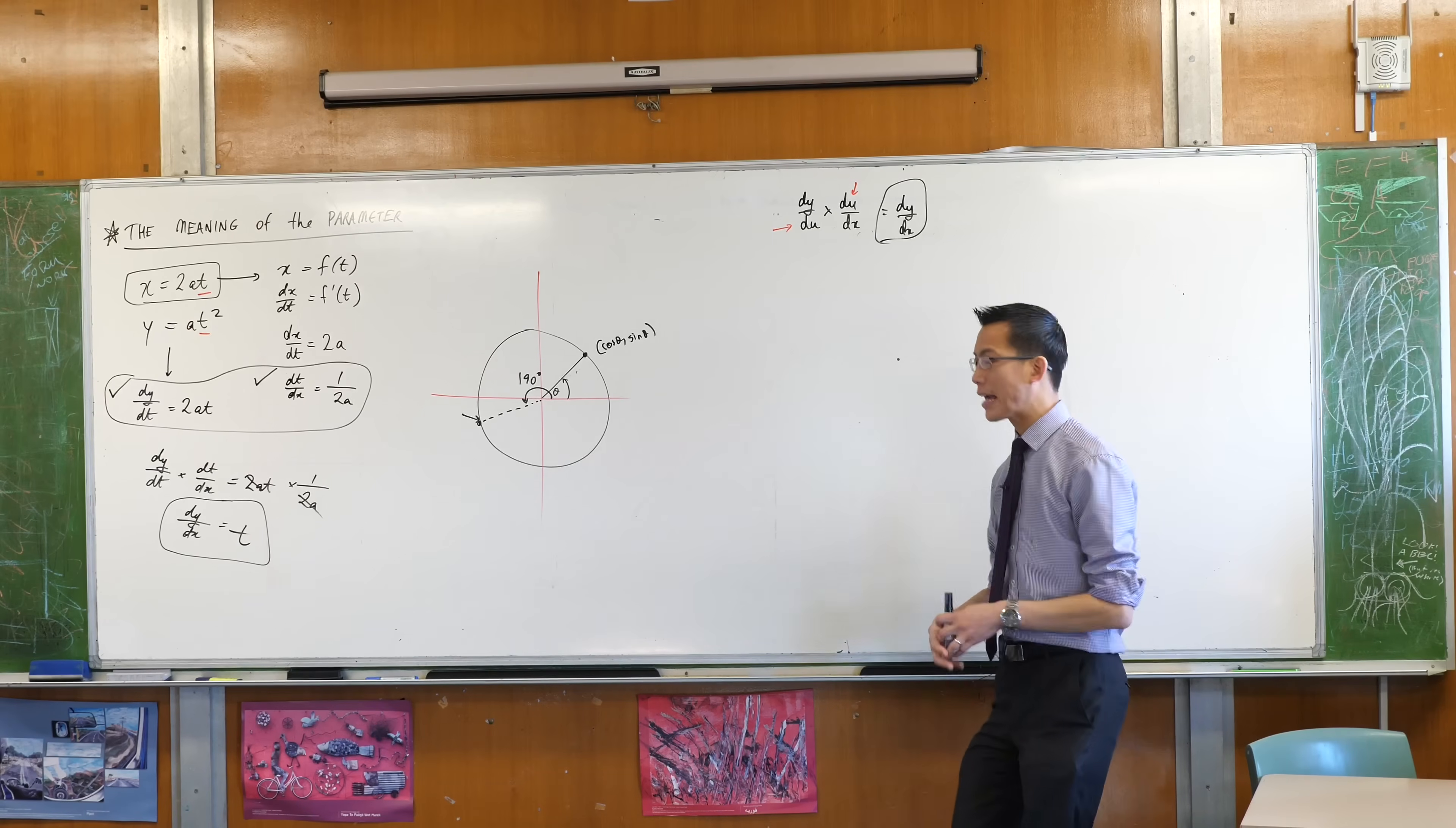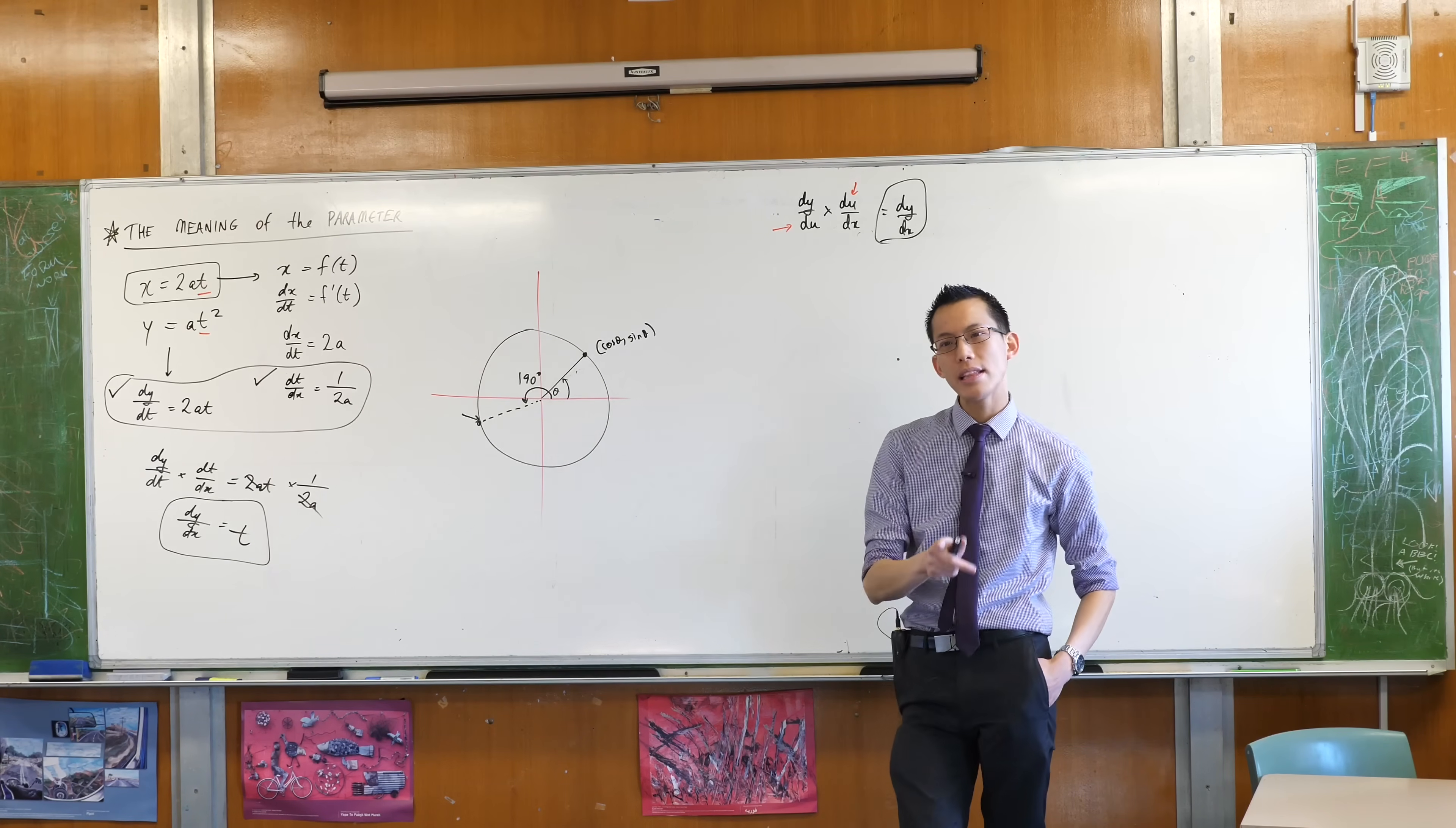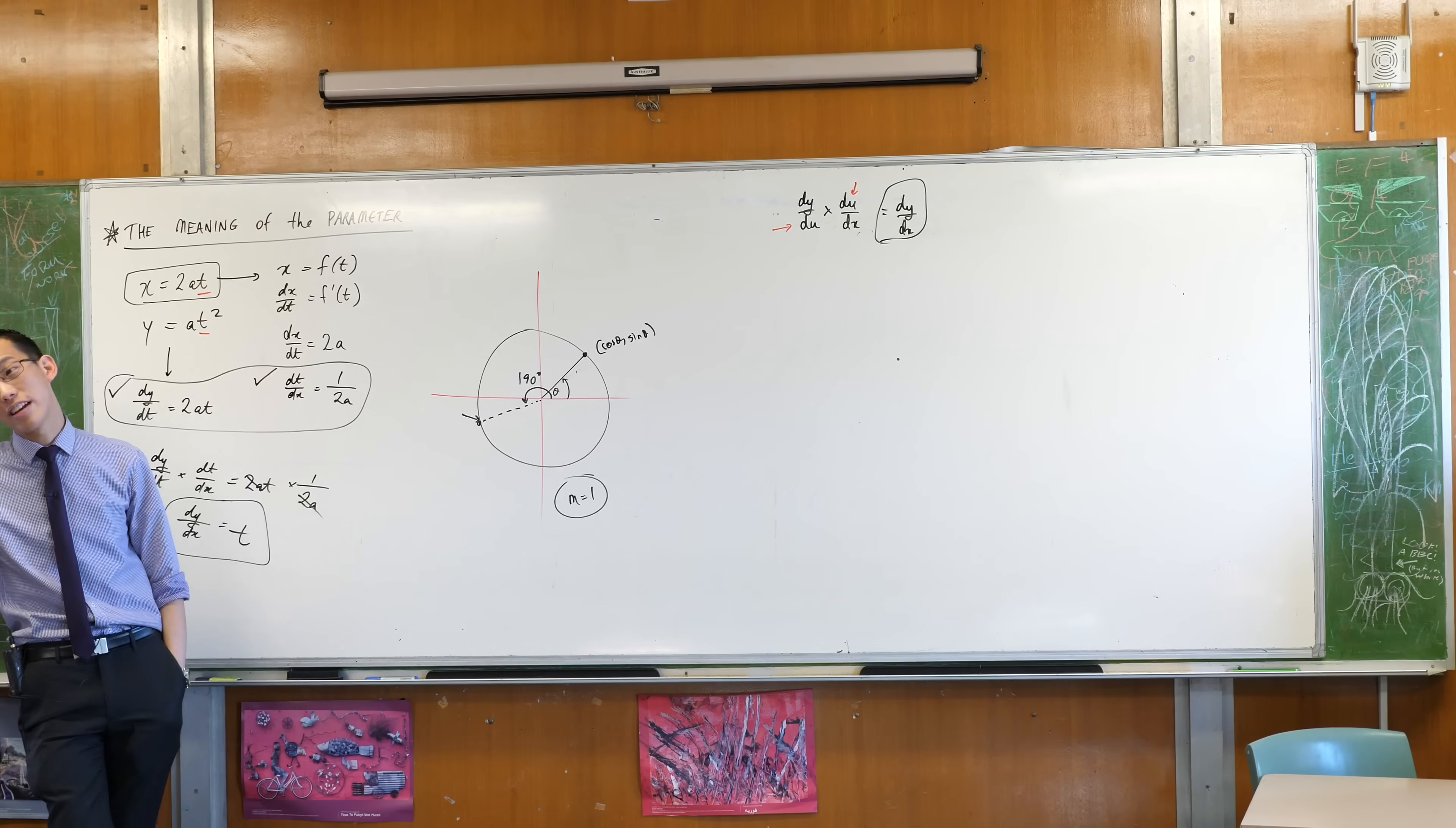Now, if I said to you, on the other hand, let's use the gradient of the spot on the circle, let's use the gradient as the parameter for the circle. You quickly run into a problem. For instance, suppose I said the spot on the unit circle that I want to be at is gradient 1, it has a gradient of 1.